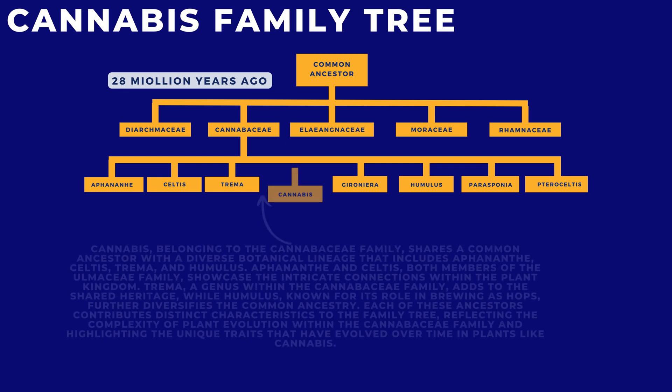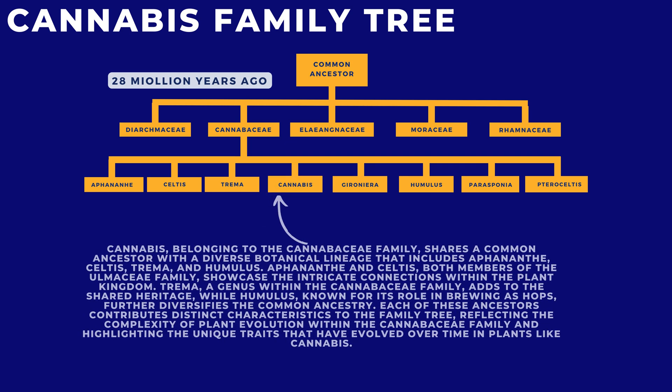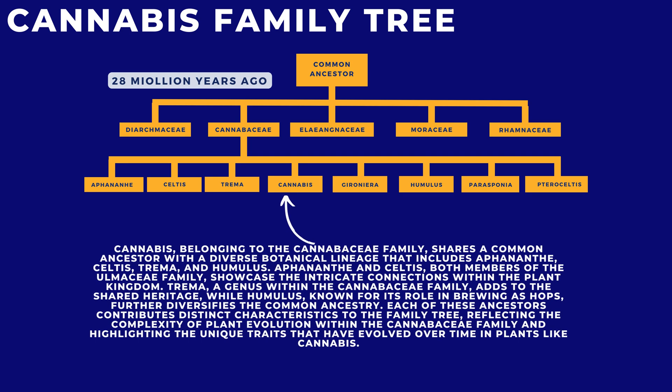Cannabis, belonging to the Cannabaceae family, shares a common ancestor with a diverse botanical lineage that includes Apparnanth, Celtis, Trema, and Humulus. Apparnanth and Celtis, both members of the Ulmaceae family, showcase the intricate connections within the plant kingdom.